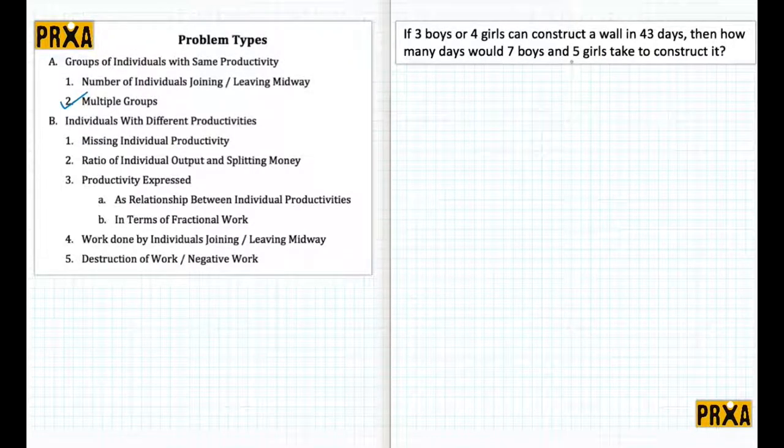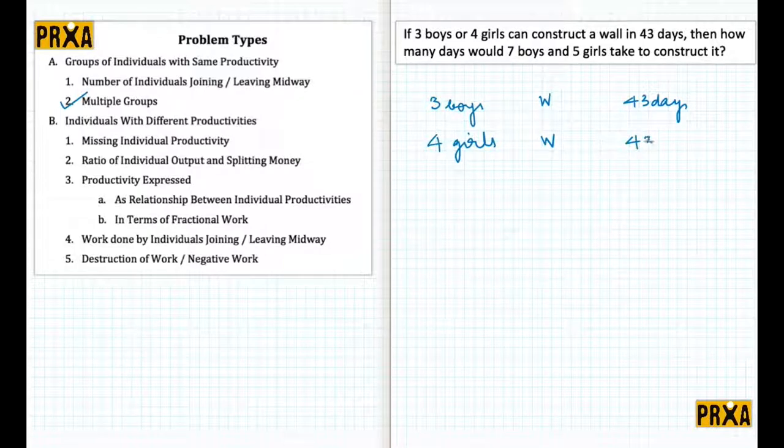The first group being the boys, the second group being the girls. Now let me just write this problem down in the standard way that we do. So what we have is three boys constructing the wall in 43 days, and we have four girls constructing the same wall in 43 days. So what we would generally do is apply w1 upon n1 t1 equals w2 upon n2 t2, but what is clear is that the group of people is different in both cases. So what we need to do here is figure out what the relationship between the productivity of boys and the productivity of girls is.